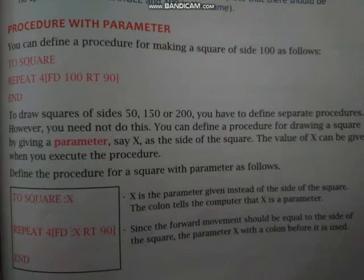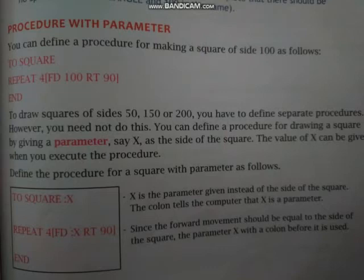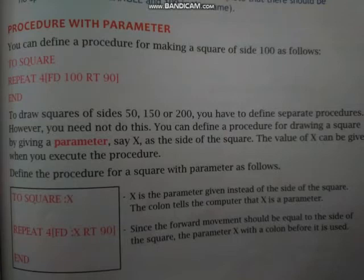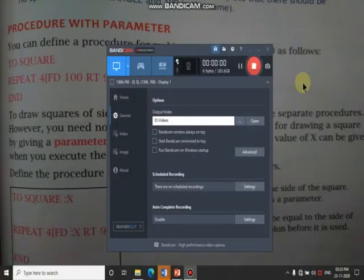तो यहाँ पर हमारा 100 side का square बन जाएगा। To draw squares of side 50, 150, or 200, you would have to define a separate procedure for each. लेकिन अब हमें वो separate-separate procedures define करने की requirement नहीं है। You can define a procedure for drawing a square by giving a parameter, so हम different sizes के squares draw करने के लिए procedure में parameter add करके यह easily perform कर सकते हैं।